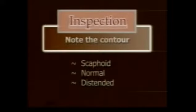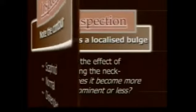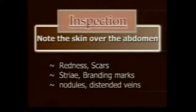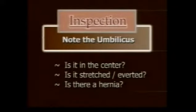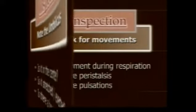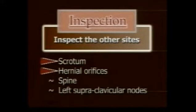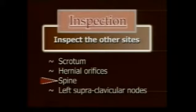To revise: on inspection, note the contour of the abdomen — whether scaphoid, normal, or distended. Look for a localized bulge and if seen, note the effect of raising the neck. Inspect the skin for redness, scars, striae, branding marks, and dilated veins. Inspect the umbilicus for position, transverse stretching, or eversion. Observe the movements of the abdominal wall and movements of the lump with respiration. Look for visible peristalsis and visible pulsations in the lump. Ask the patient to stand and inspect the hernial orifices and the scrotum. From the back, inspect the spine, paraspinal regions, and the renal angles. And lastly, inspect the left supraclavicular region for swelling.